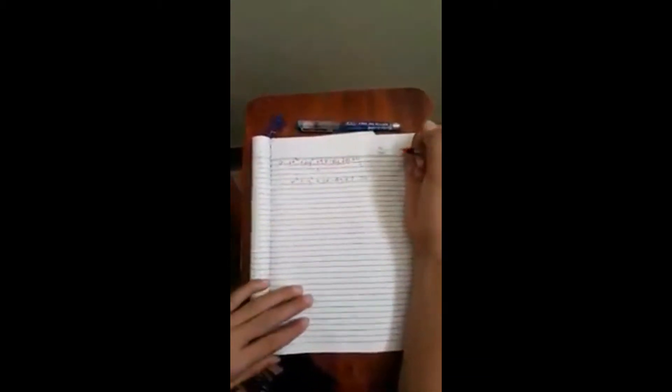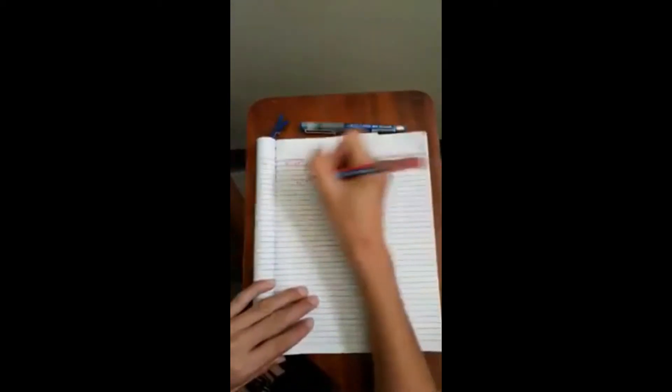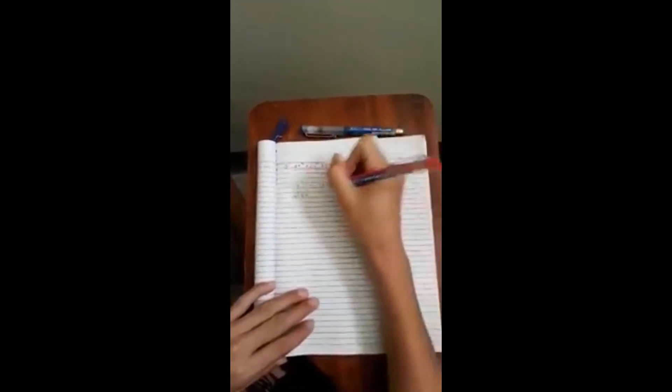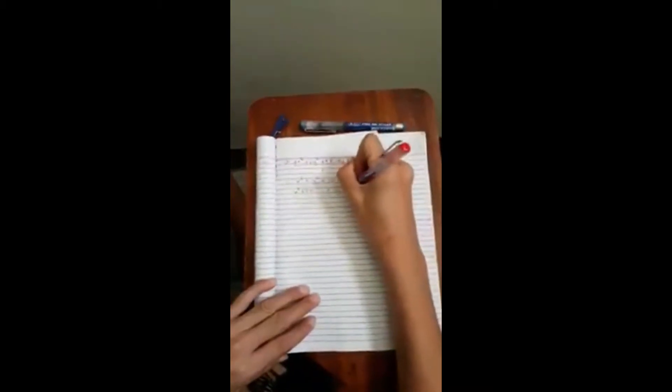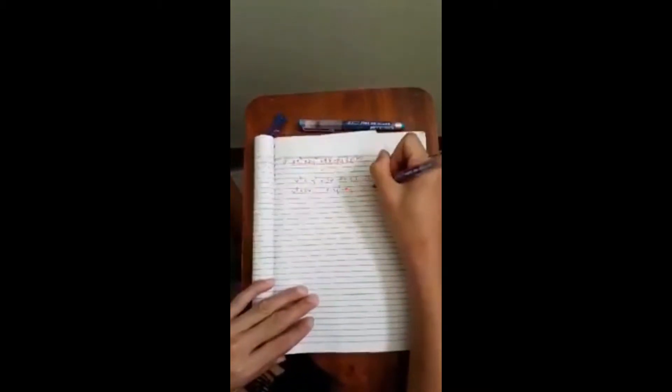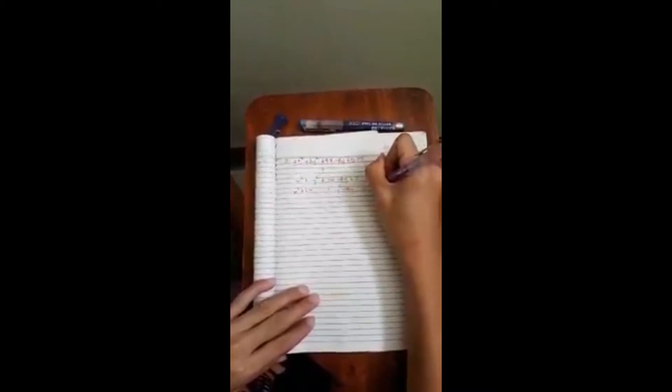Then we will combine like terms. It will become x squared plus 2x plus y squared minus 4y equals negative 5.